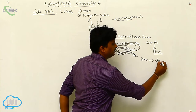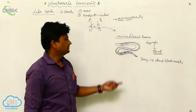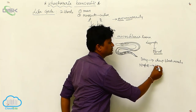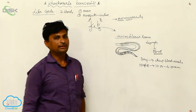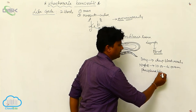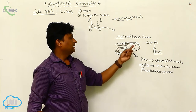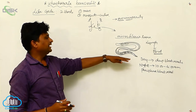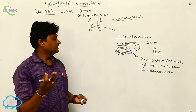During the daytime, microfilaria are found in the deep blood vessels. At night, from 10 PM to 4 AM, they move to the peripheral blood vessels. Further growth is not possible inside the human body, so they must be transferred to the secondary host — the Culex mosquito.